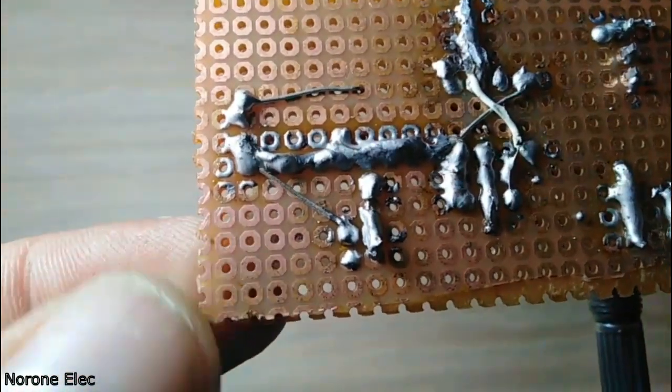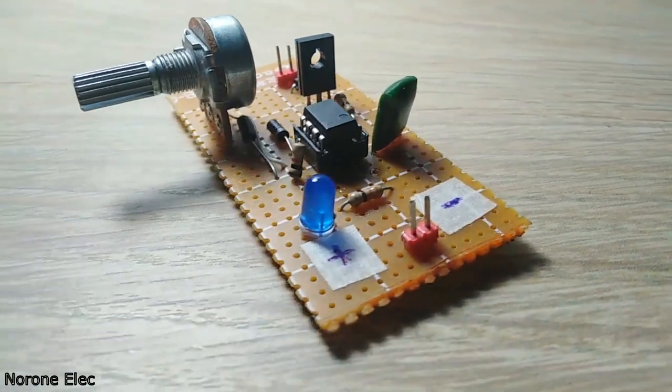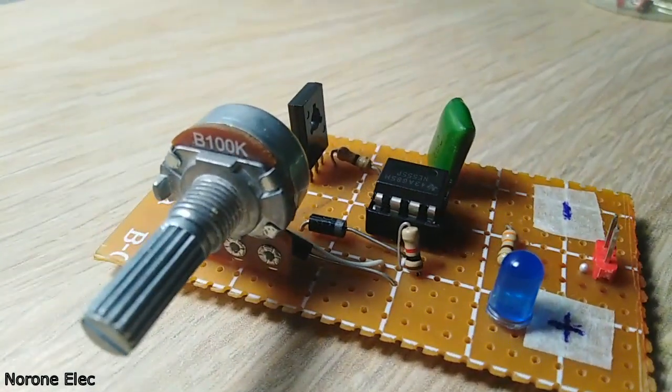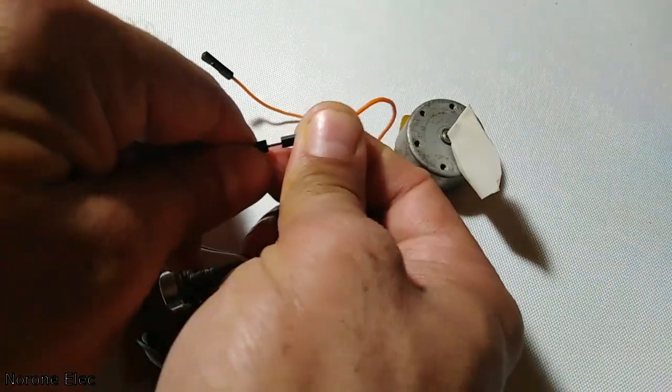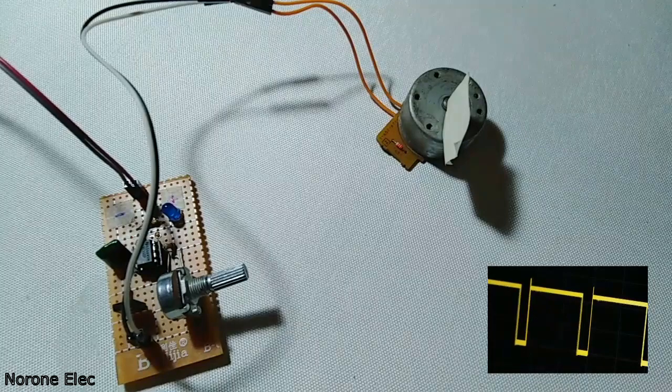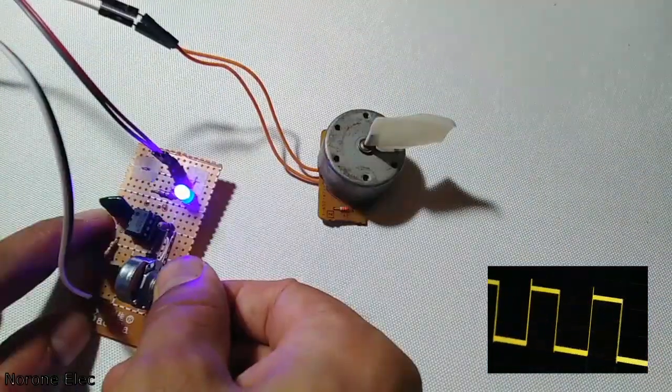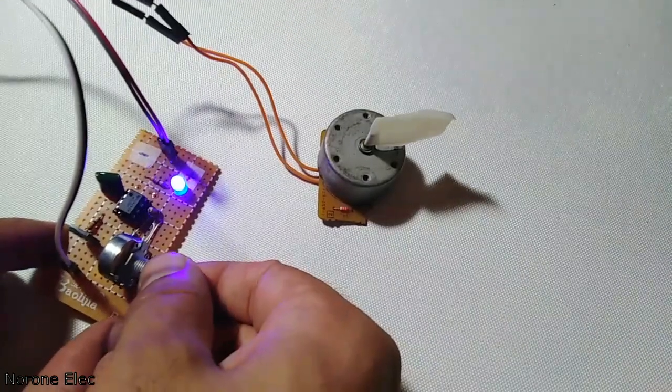I solder everything in place and here is the final appearance. I connect a DC motor and 9V power supply. Using the potentiometer we are able to control the PWM signal produced by the 555 timer IC and the speed of the DC motor.